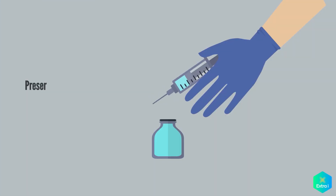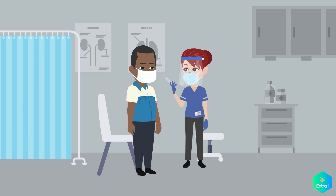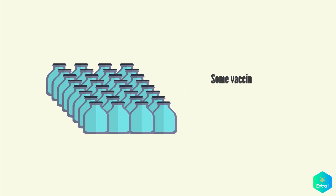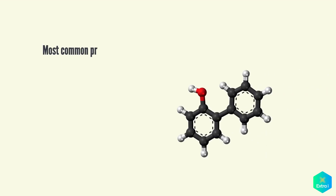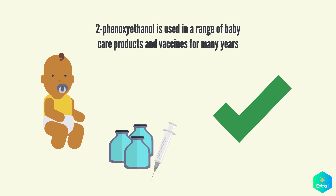Preservatives prevent the vaccine from becoming contaminated once the vaccine vial has been opened, if it will be used for vaccinating more than one person. Some vaccines do not have preservatives because they are stored in one-dose vials and are discarded after the single dose is administered. The most commonly used preservative is 2-phenoxyethanol. It has been used for many years in a number of vaccines and is used in a range of baby care products, as it has little toxicity in humans.